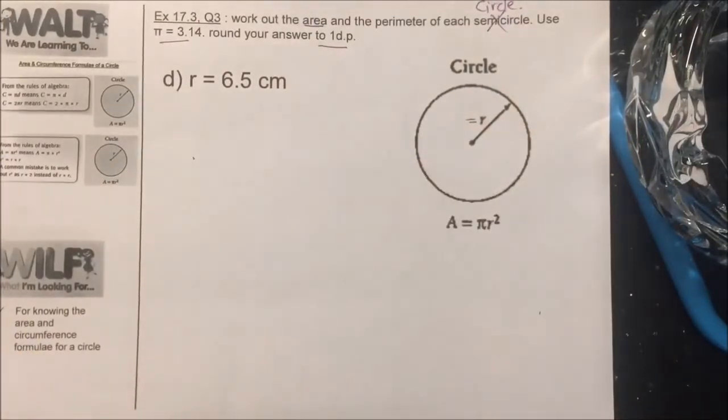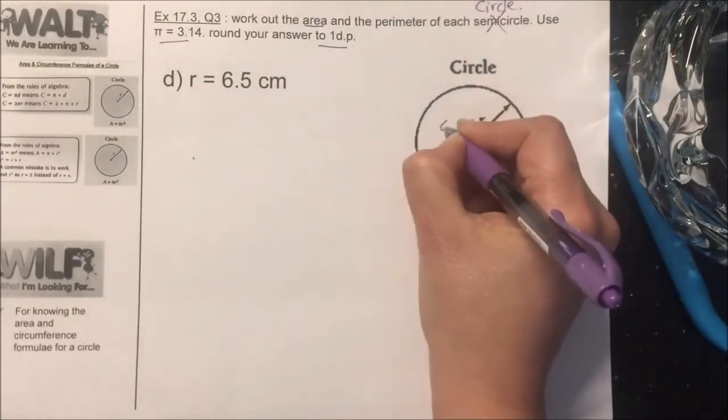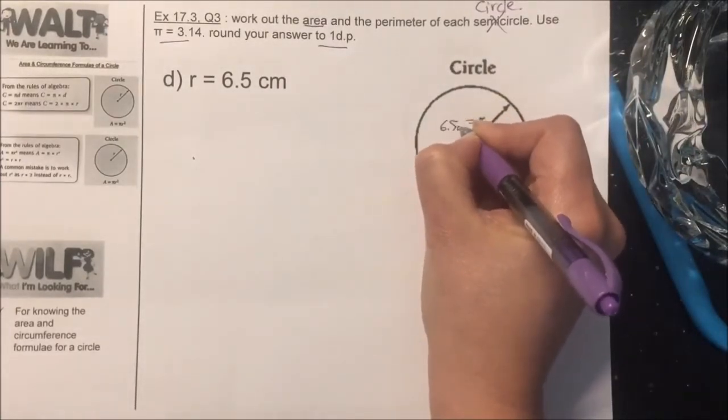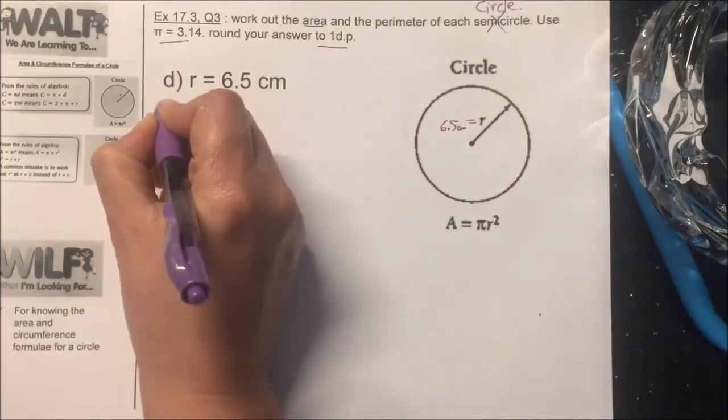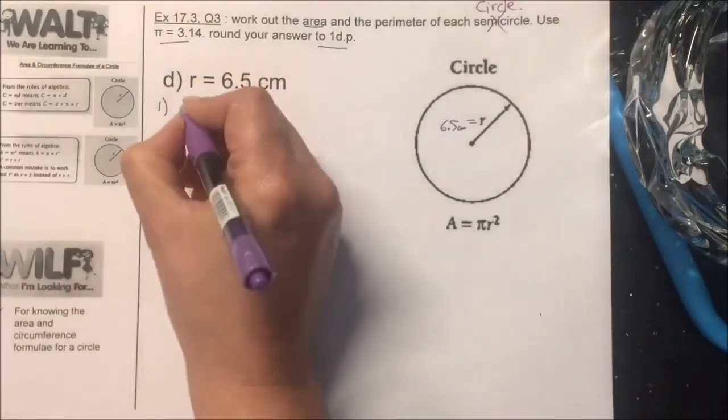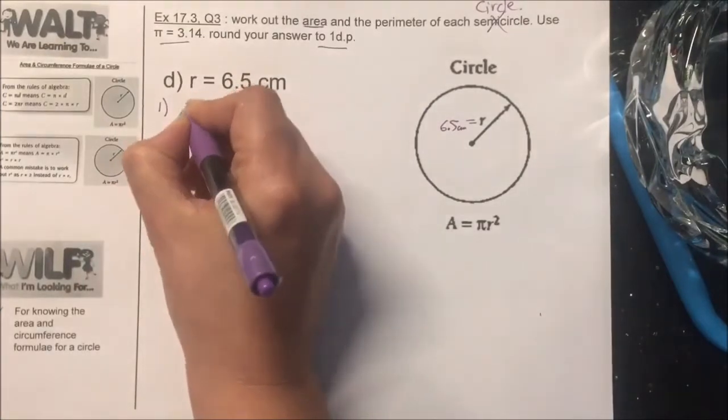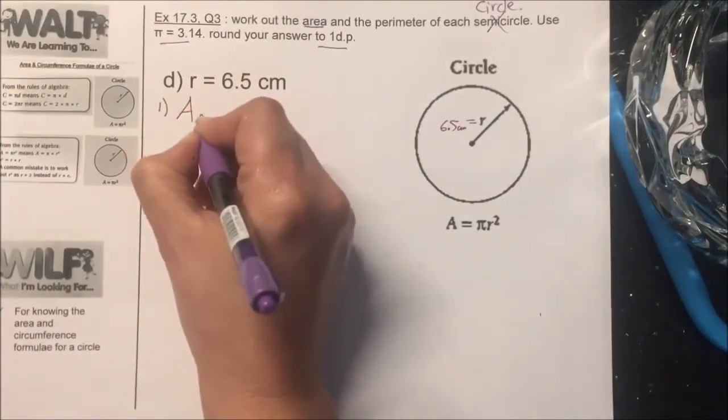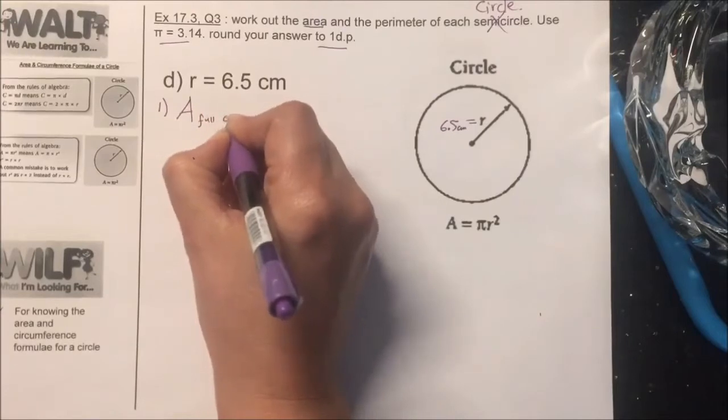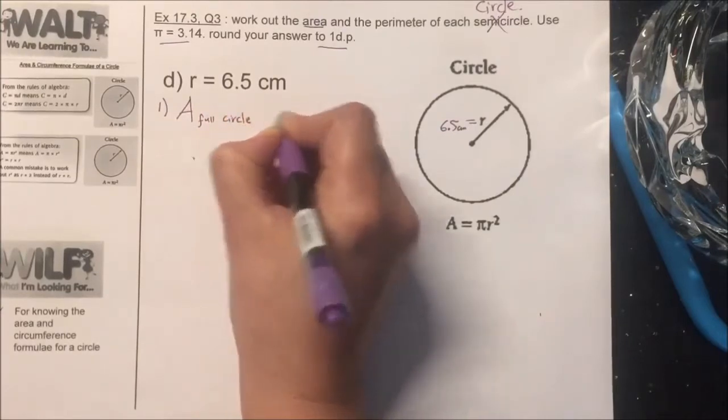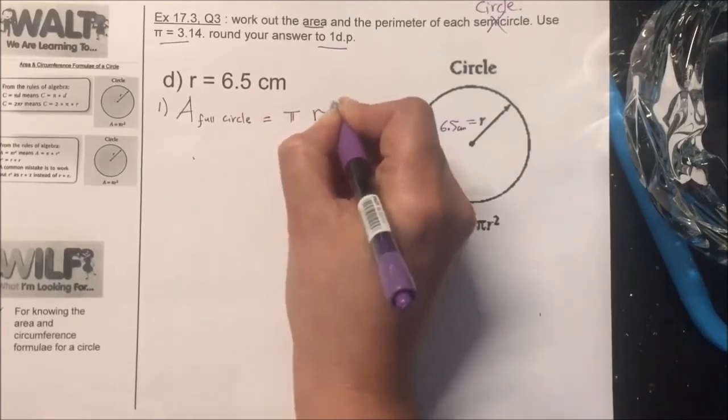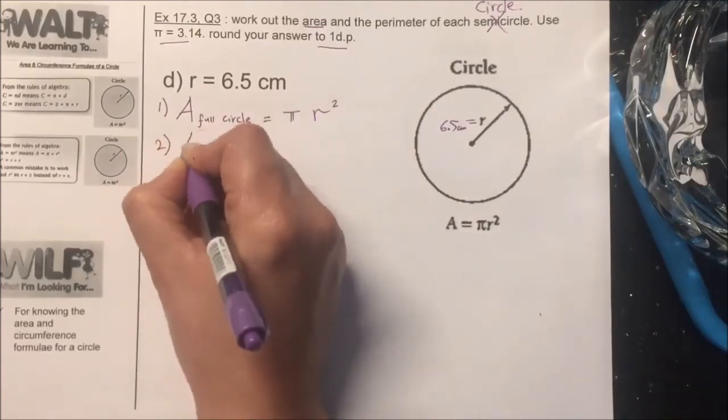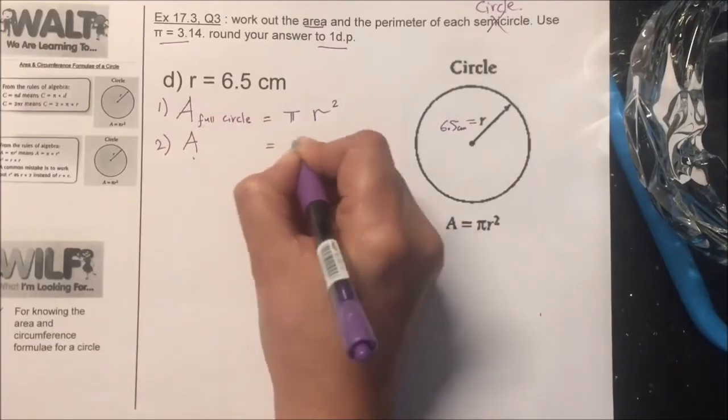What is provided here is the radius and that's what I need to calculate the area. The radius here is 6.5 centimeters. Step number one: write the general formula for finding the area of a full circle equals to pi r squared. Number two: substitute in the general formula.